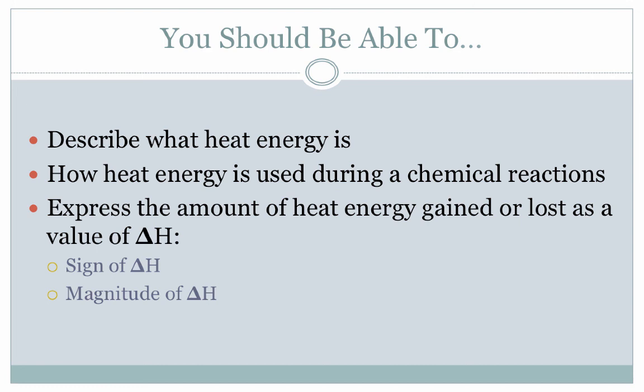So that's pretty much it for today. Just to get us started with the thinking process here, at this stage in the game, you should be able to describe what heat energy is and how it fits into this bigger world of thermochemistry and thermodynamics. You should be able to describe how heat energy is used during chemical reaction. It's either given off as an excess when the reaction has released more energy than it needs to put the products together, or it's absorbed from the surroundings when the reaction needs more energy than is given to it to form the products. And last but not least, you should be able to express the amount of heat energy gained or loss as a value of delta H, keeping in mind that the sign for delta H is important and the magnitude of delta H is important as well. These are not values that you can come up with on your own yet. Delta H values will be given to you for the first part of the chapter. In the second half of the chapter, we'll talk about where these delta H values actually come from.